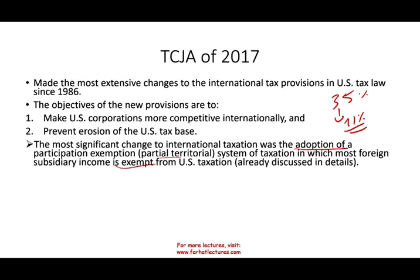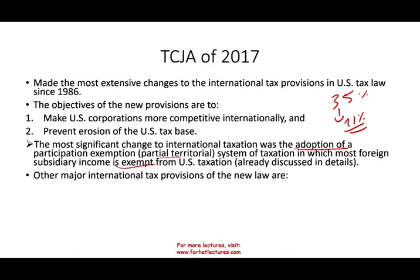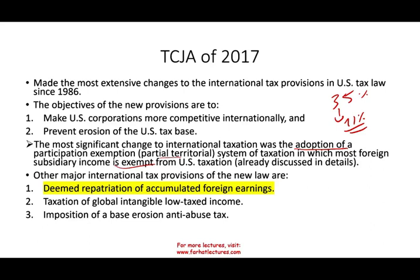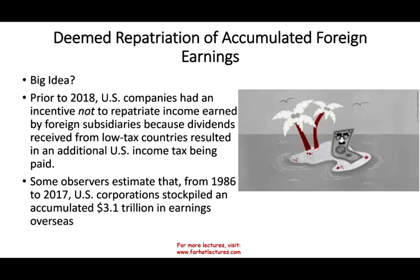This is a participation exemption system in which most foreign subsidiaries are exempt from U.S. taxation. We discussed this topic in detail in this course, as you can see in the playlist for this chapter. Other major international tax provisions we're going to be discussing are the deemed repatriation of accumulated foreign earnings, taxation of global intangible low-taxed income (GILTI), and the imposition of a base erosion anti-abuse tax.